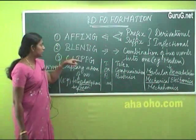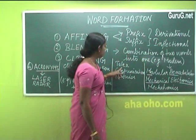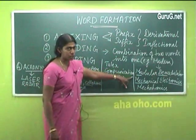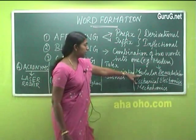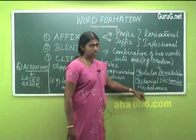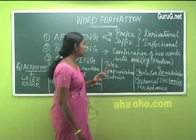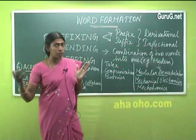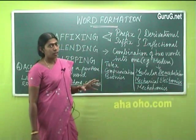Blending is the second type of word formation where we combine two words. Telex is from teleprinter exchange; computation is from computer communication; bionics is from biological electronics; modem from modular demodulator; mechatronics from mechanical electronics. You take out a portion of these two words and coin a third word by the process called blending.